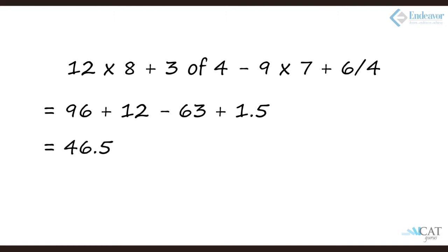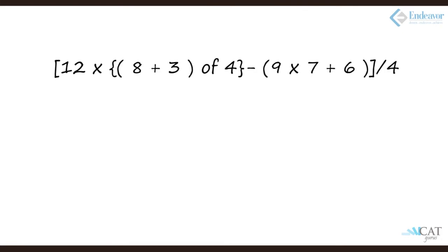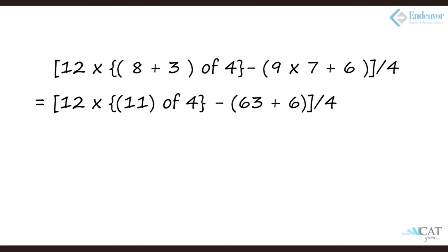Now let's look at the other equation. What do we need to solve first? We need to solve the smallest bracket. So 8 plus 3 gets solved first. Then we look at the next smaller bracket which is 9 into 7 plus 6. Multiplication comes first, so 9 into 7 is 63 plus 6 becomes 69. Going ahead, then we solve the second bracket which is 11 of 4. 11 cross 4 is 44. So we get 12 into 44 minus 69 whole thing divided by 4 because whole thing is outside the bigger bracket. Solving this we get 114.75.